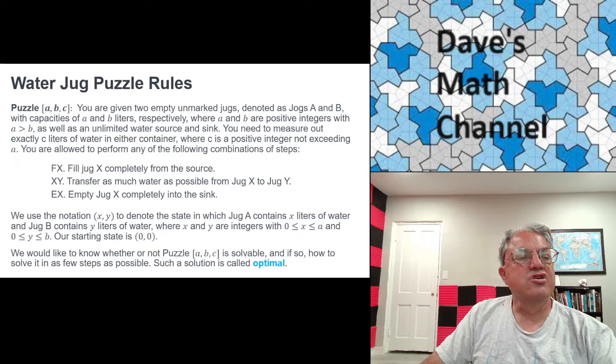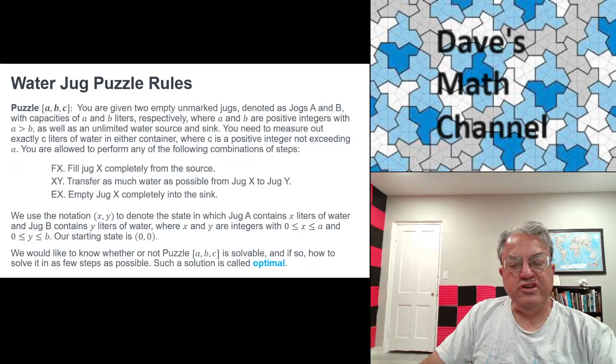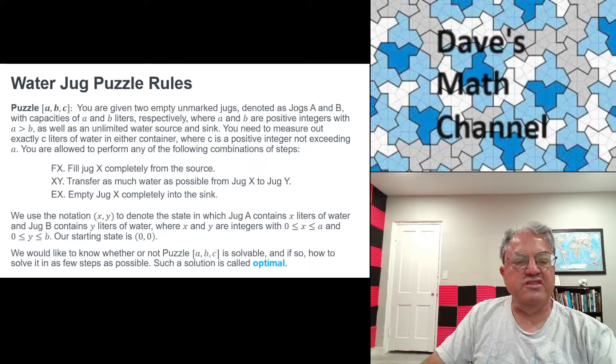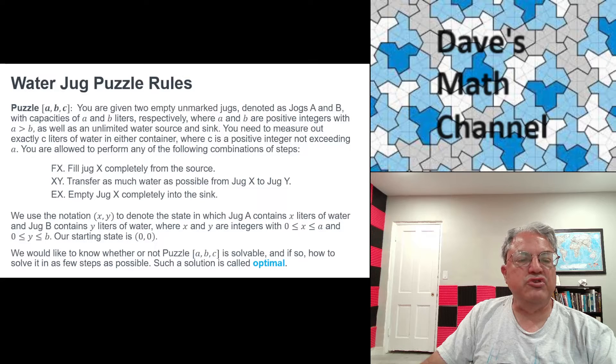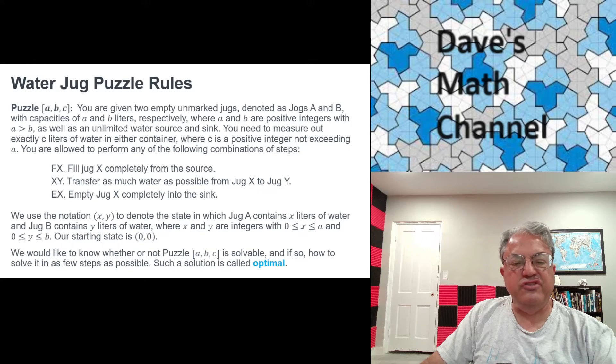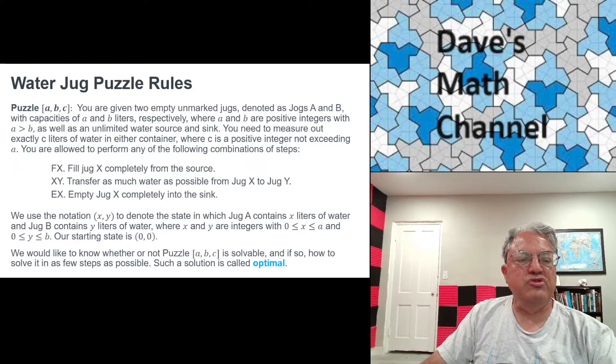So the question is whether or not this puzzle [a,b,c] is solvable. And if it is, we'd like to have a step-by-step procedure on how to solve it. And ideally, we'd like to find an optimal solution. This is a little harder. I think it's enough just to find a solution or to characterize whether or not for a particular a, b, c there is a solution. If there is, find one. If you want to be even more clever, you can find an optimal solution - that would be a solution involving the minimal possible number of steps.